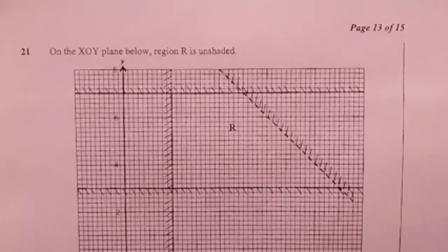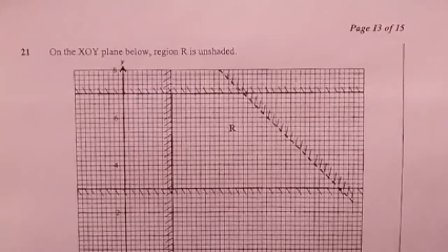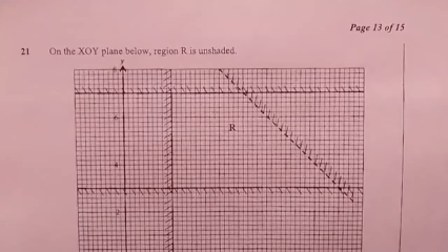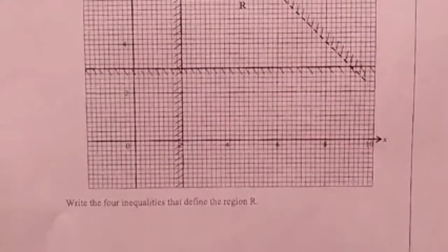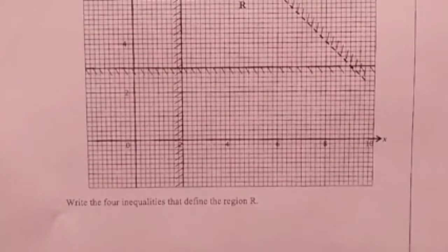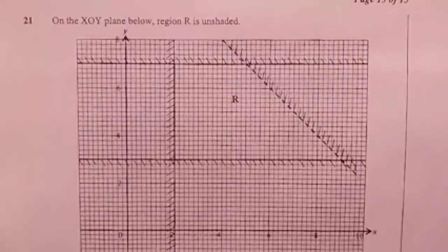The difference between this question and the one that we did in the first episode is the graph is already drawn, the inequality is presented already, shaded to identify the region R. The examiner is asking you to write down the 4 inequalities that define the region R. Our task here is to find the inequalities that were used to produce the unshaded regions as well as to identify the region R.